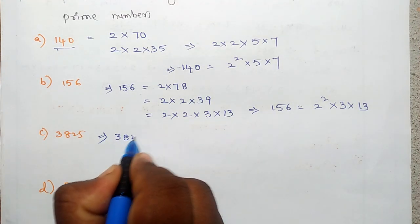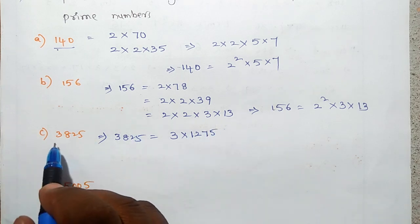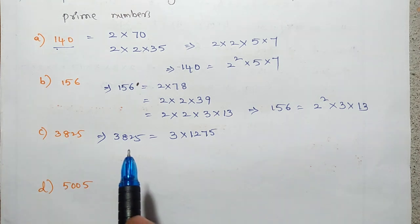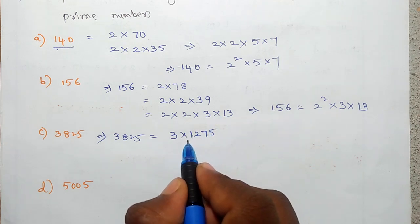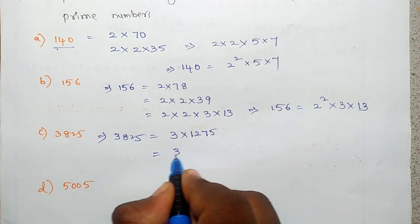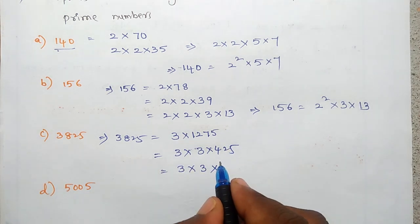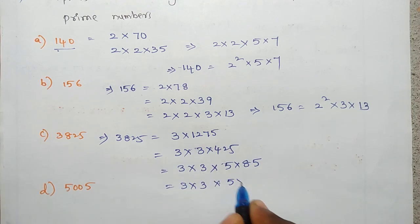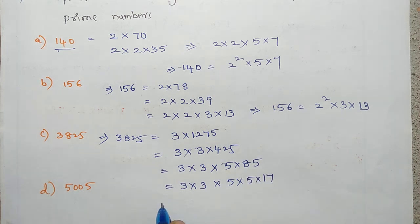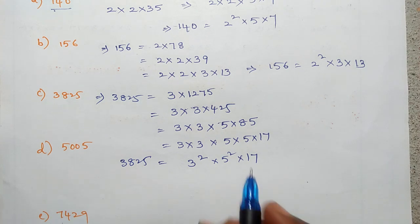Next, 3825. I am writing it as a product of 3 into 1275, because 3825 is not divisible by 2. First we have to know the divisibility rules — whether the number is divisible by 2, 3, 4, or 5. So 3825 equals 3 into 1275, then 1275 equals 3 into 425, and 425 equals 5 into 85. So 3825 is equal to 3 squared into 5 squared into 17.